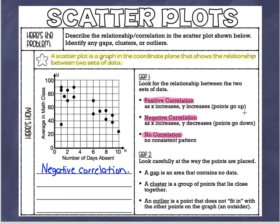Now let's look for three other things in a scatter plot. First is a gap — an area that contains nothing, like a big blank area on the graph. Second is a cluster — a group of points all close together. Third is an outlier — a point that just doesn't fit in. It's like an outsider; it just doesn't make any sense with the rest of the graph.